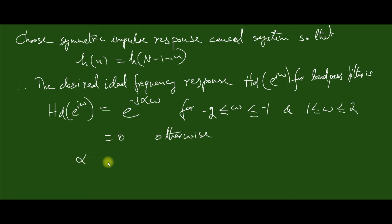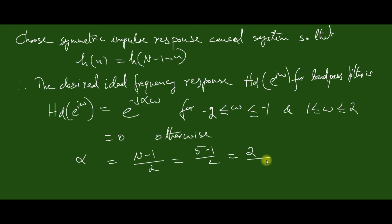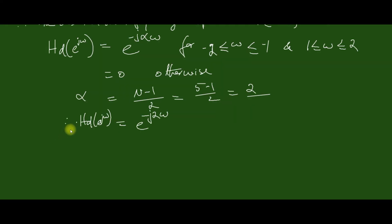Here, alpha equals (N−1)/2, which equals (5−1)/2 equal to 2. Therefore, since alpha equals 2, Hd(e^jω) equals e^(−j2ω).